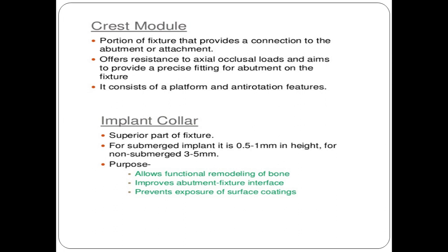The crest module is the portion of the fixture that provides connection to the abutment, offers resistance to axial occlusal load, and aims to provide a precise-fitting abutment on the fixture. The implant collar is the superior part of the fixture: for a submerged implant it is 0.5–1 mm in height; for a non-submerged implant it is about 3–5 mm. Its main purposes are to allow functional remodeling of the bone, improve the abutment-fixture interface, and prevent exposure of the surface coating.